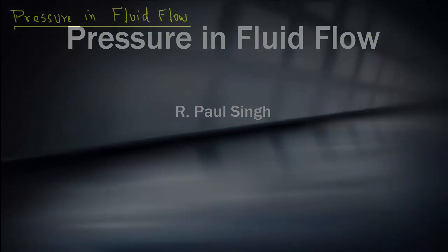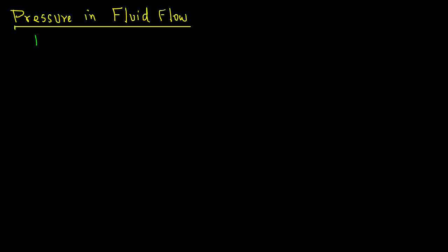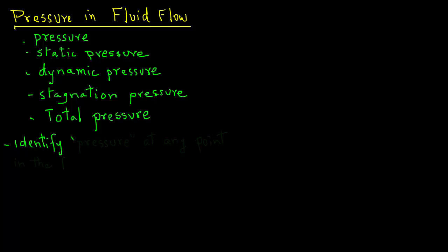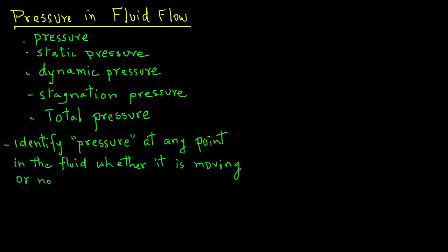In fluid flow measurements, we will encounter different terms used to describe pressure, such as pressure, static pressure, dynamic pressure, stagnation pressure, and total pressure. Let's try to sort these out and clarify what each term means. We can identify pressure at any point in the fluid, whether that fluid is moving or stationary.